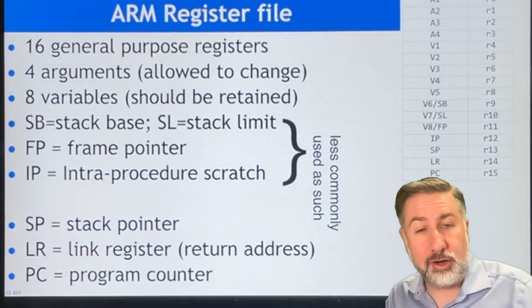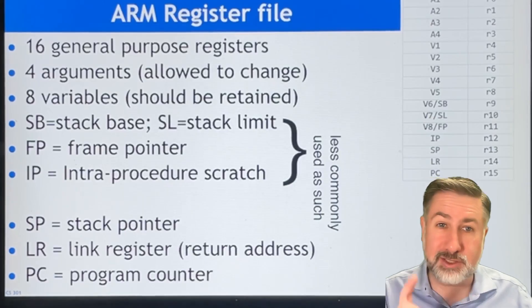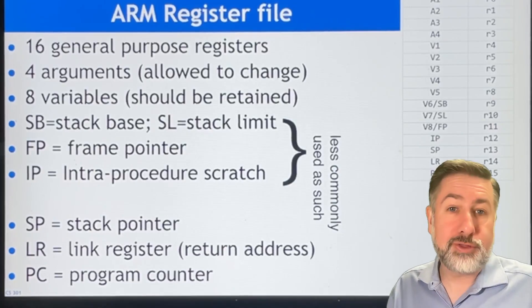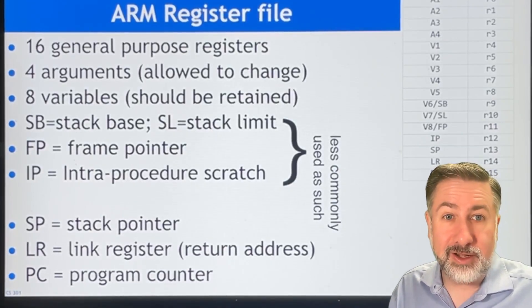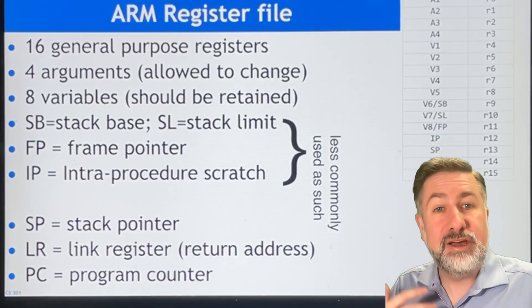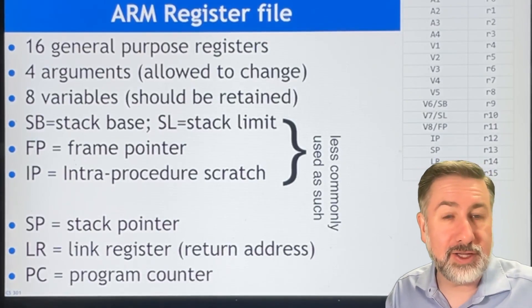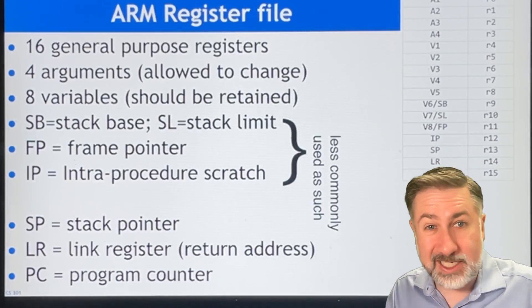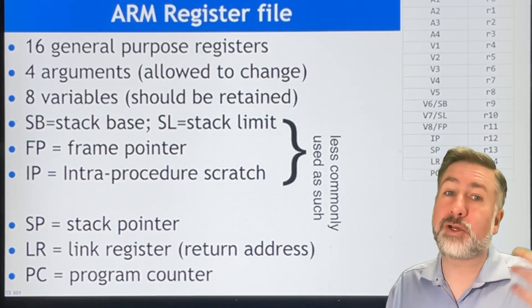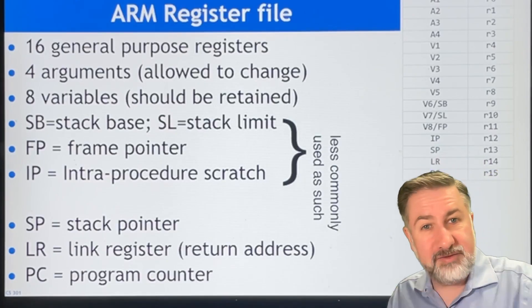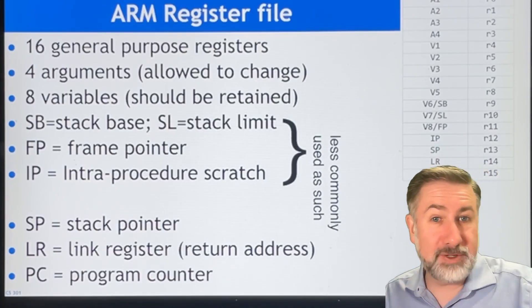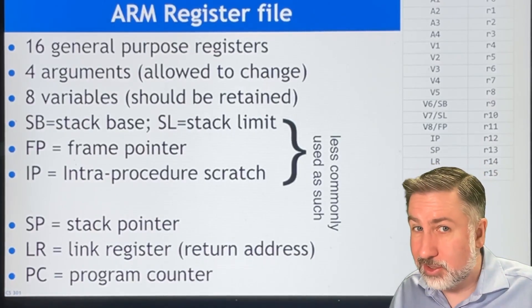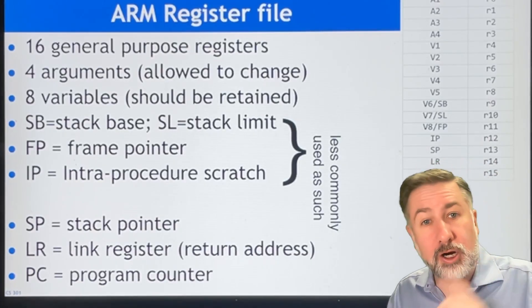The instructions are three-operand instructions, which means you specify two sources and a destination. In MIPS with 32 registers, that means you had 5, 10, 15 bits just to specify the source and destination of your instruction. Because every register has to pick one of 32, you need 5 bits — 5 for the first source, 5 for the second source, and 5 for the destination. That's essentially half the instruction just on selecting registers. So ARM goes a different direction.